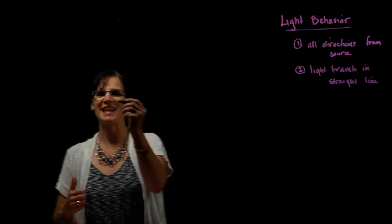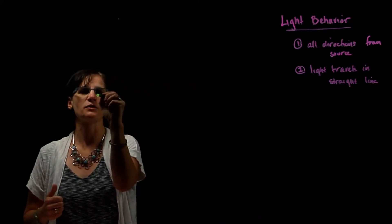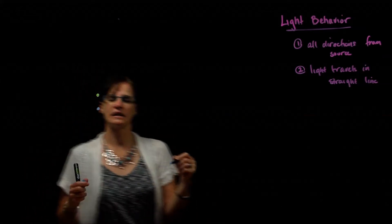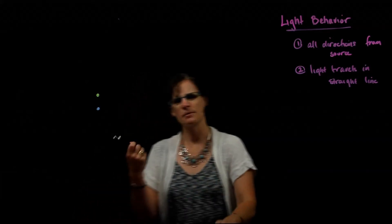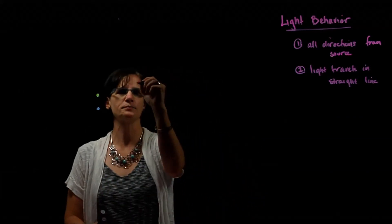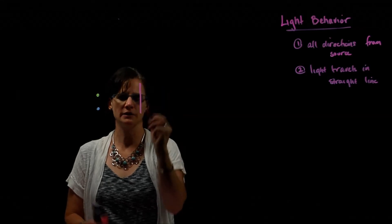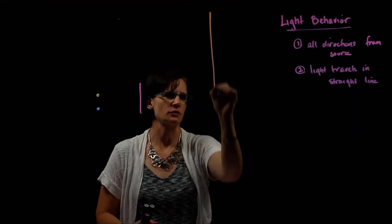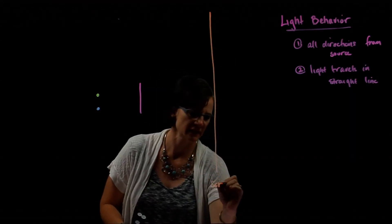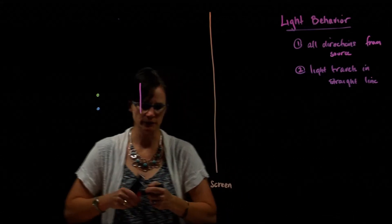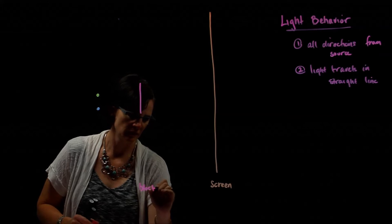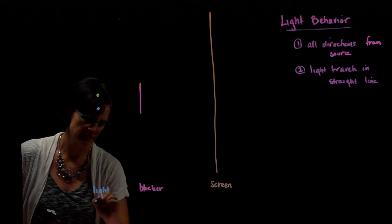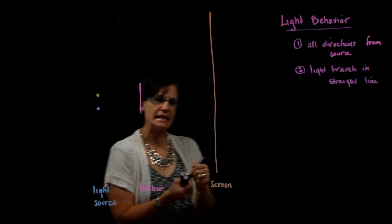We did this example in class, but let's review it so you have something to study. Here we have two lights oriented vertically from one another — they're point sources of light. I'll use different colors to help organize. We have a blocker and a screen. This is our screen, this is our blocker, and these are our light sources.